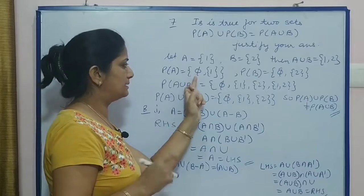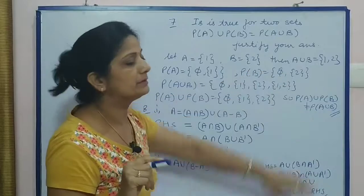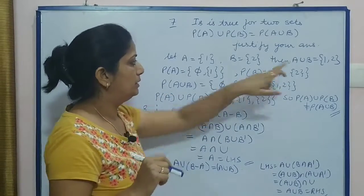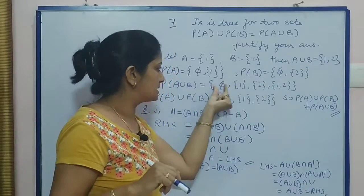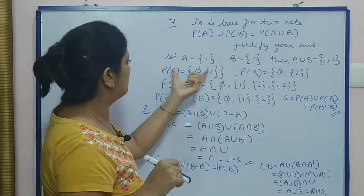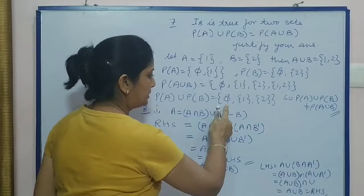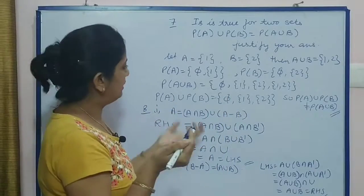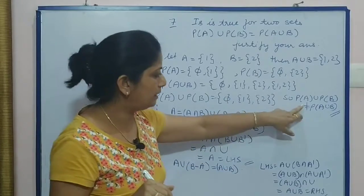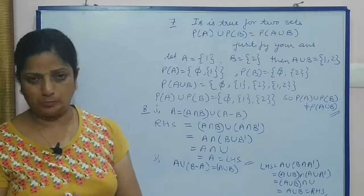Now we calculate P(A). What is P(A)? Empty set and the single set {1}. Now P(B) is empty set and {2}. What is the union P(A) union B? For union, there will be empty set, {1}, {2}, and also the complete set {1, 2}. Whereas if we calculate P(A) union P(B), we get empty set, {1}, and {2}. Clearly, these two sets are not equal. Therefore, P(A) union P(B) is not equal to P(A union B).